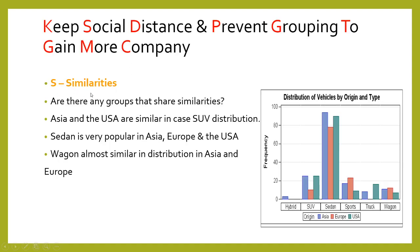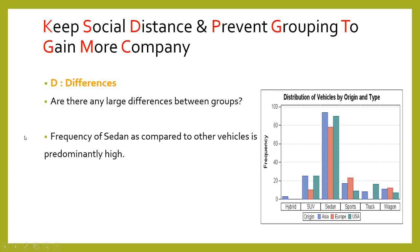S stands for Similarities — are there any groups that share similarities? Asia and the USA are similar in case of SUV distribution. Sedan is very popular in Asia, Europe, and the USA. Wagon is almost similar in distribution in Asia and Europe. D stands for Differences — frequency of sedan as compared to other vehicles is predominantly high, which is a huge difference.